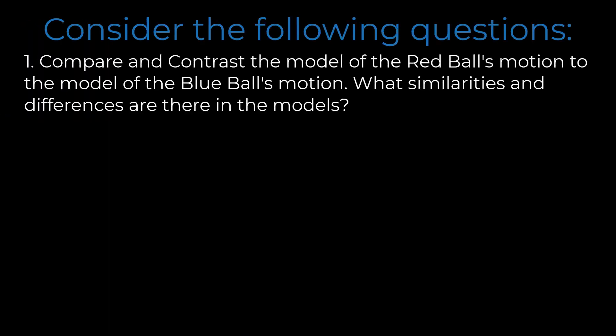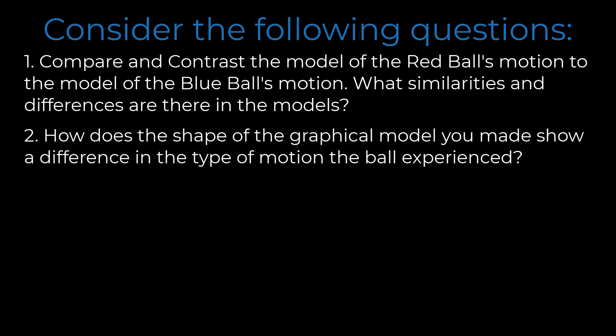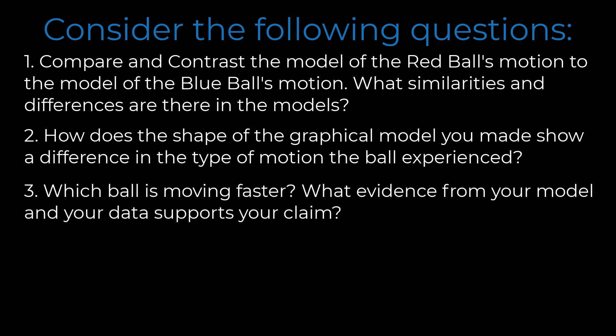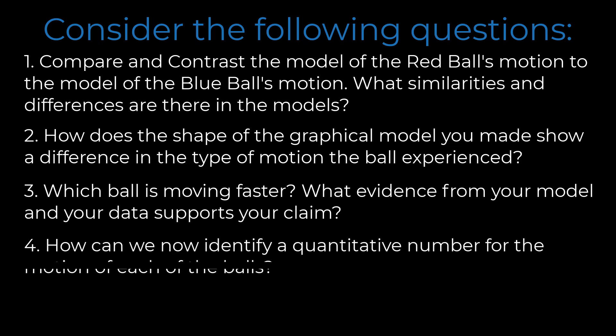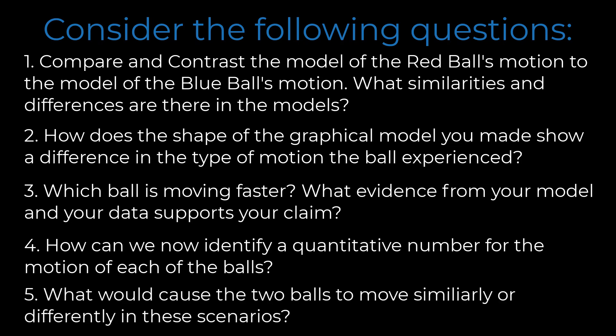In this video we explored the motion of a red ball and a blue ball rolling on different surfaces. Consider these final questions: One, compare and contrast the models of the red ball's and blue ball's motion — what similarities and differences are there? Two, how does the shape of the graphical model show a difference in the type of motion experienced? Three, which ball is moving faster, and what evidence supports your claim? Four, how can we identify a quantitative number for the motion of each ball? Five, what would cause the two balls to move similarly or differently in these scenarios?